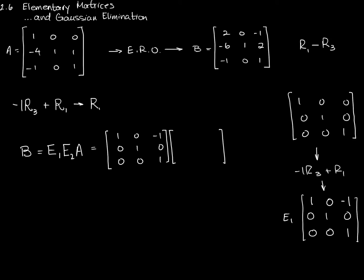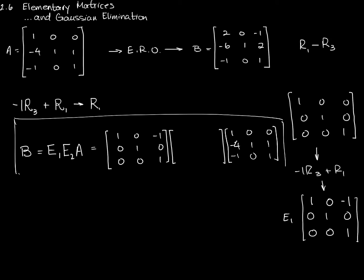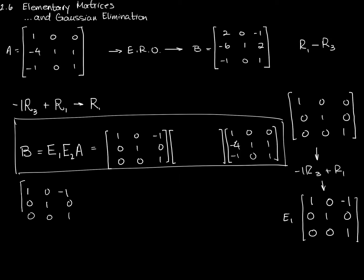With matrix A being [1, 0, 0; −4, 1, 1; −1, 0, 1], I'll now multiply E1 by A to get an interim result I'll call A1. For row 1: 1 times 1 plus 0 plus (−1 times −1) equals 2; 1 times 0 plus 0 plus (−1 times 0) equals 0; and (−1 times 0) plus 0 plus (−1 times 1) equals −1. I'll call this interim result A1.